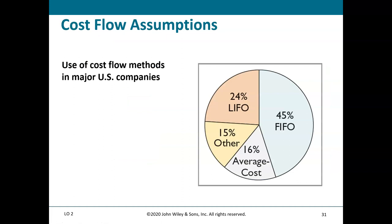A chart shows that among U.S. companies, 45% use FIFO — the most common method — 24% use LIFO, 16% use average cost, and the remaining 15% use other methods such as specific identification.